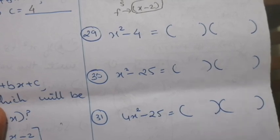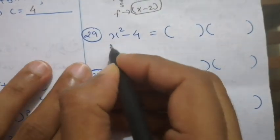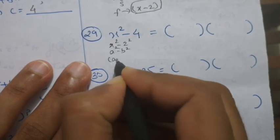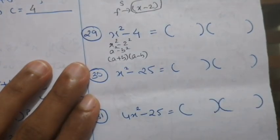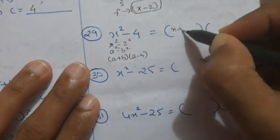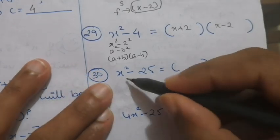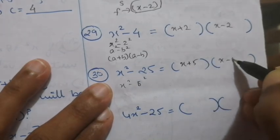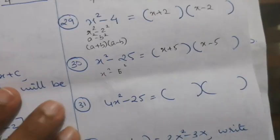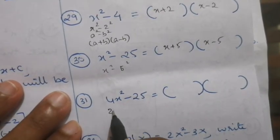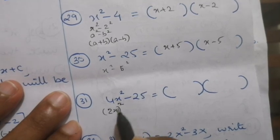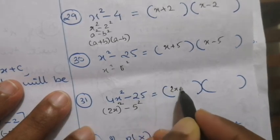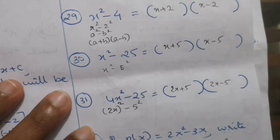Important concept: x squared minus 4 means x squared minus 2 squared, which is of the form a squared minus b squared equals a plus b into a minus b. So x squared minus 4 equals x plus 2 into x minus 2. Similarly, x squared minus 25 equals x plus 5 into x minus 5. And 4x squared minus 25 equals 2x squared minus 5 squared, so it equals 2x plus 5 into 2x minus 5.